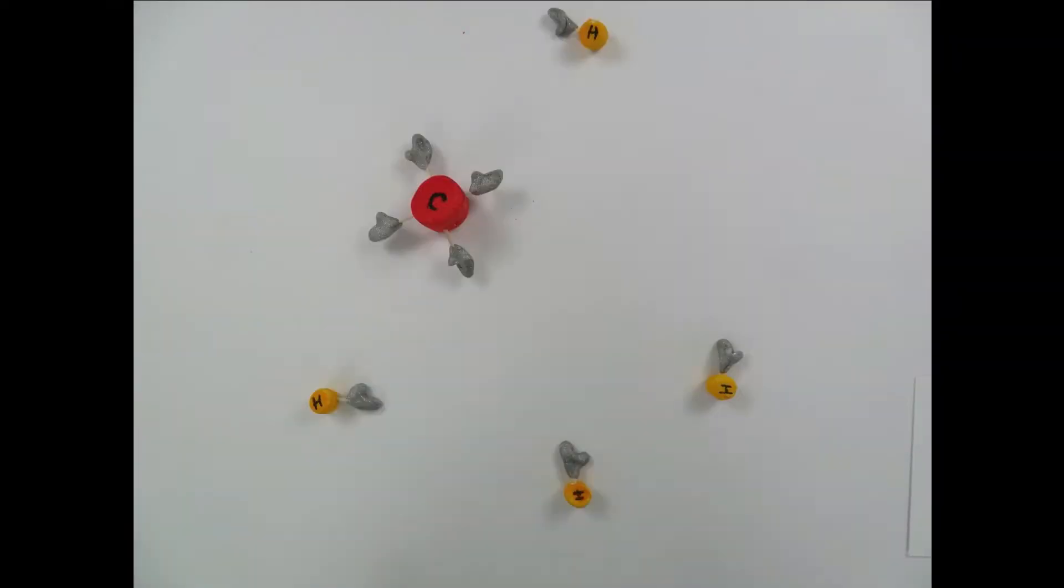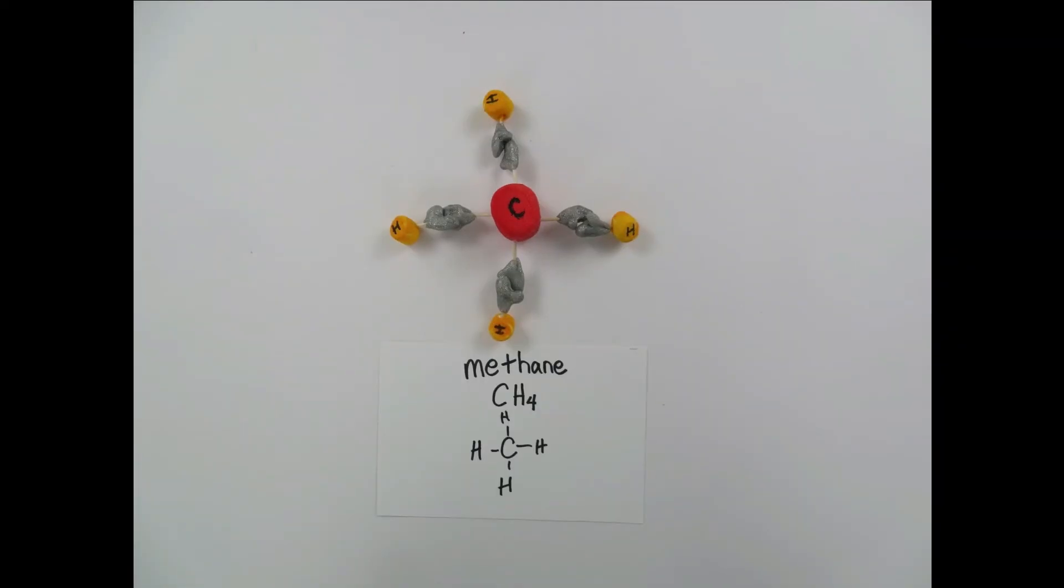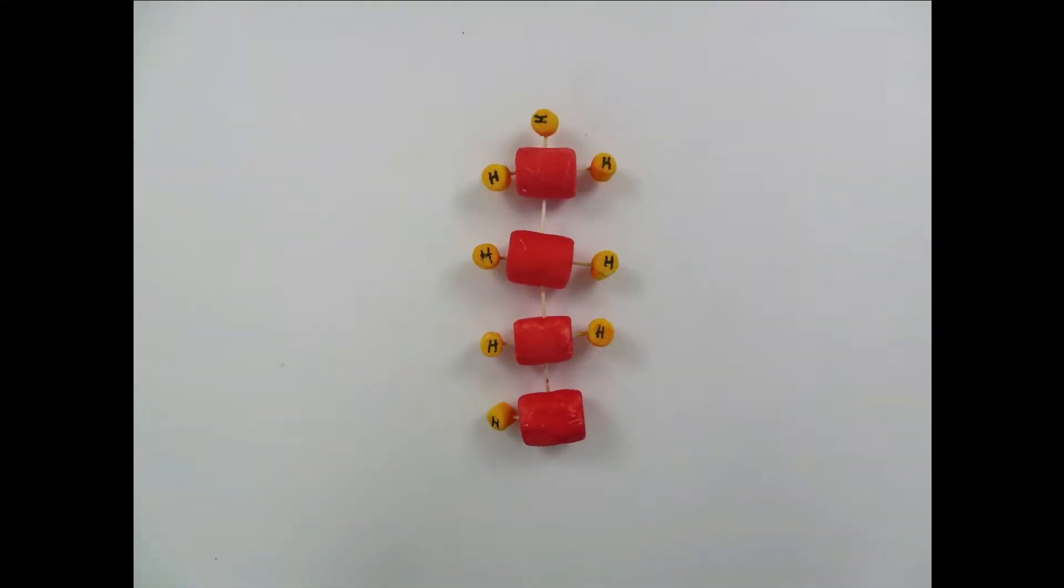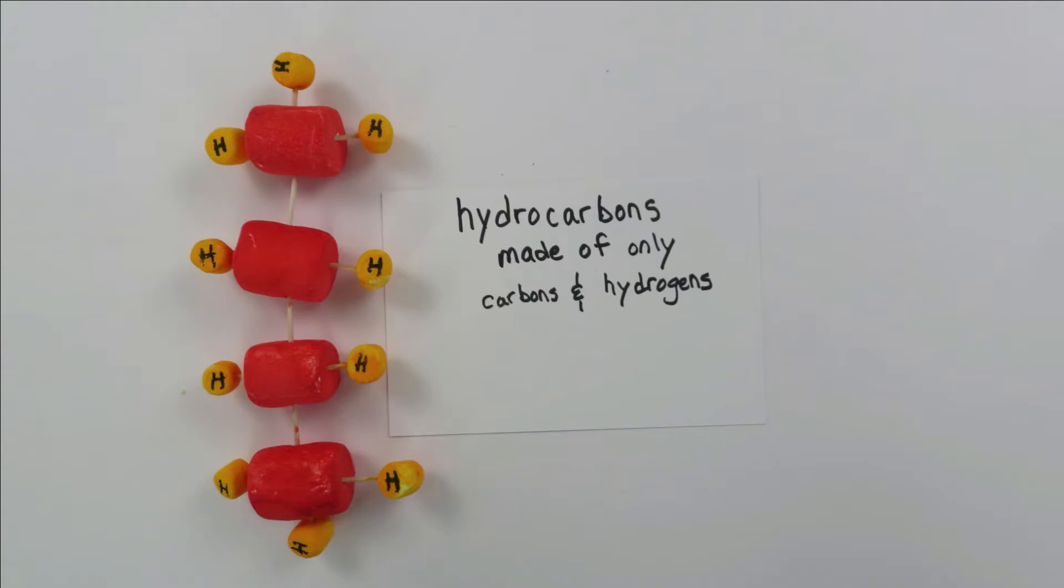Let's look at methane gas. It's made of one carbon and four hydrogens. Methane is the smallest hydrocarbon. Hydrocarbons are molecules made only of carbon and hydrogen, like this one. They can get really long or really complicated in fossil fuels.